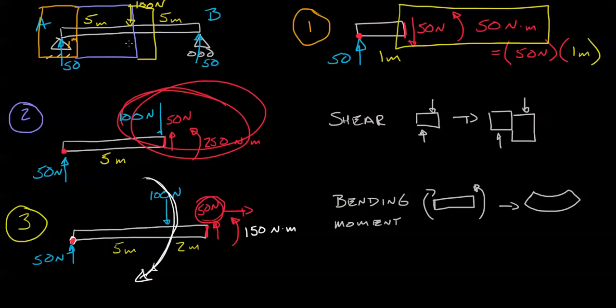As we continue to cross to section 3, no matter if this distance is 2 meters or all the way to 5 meters, you're going to have 50 newtons going up. Let's take a second and see if we can graph this.